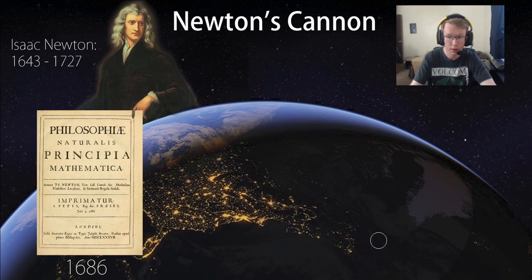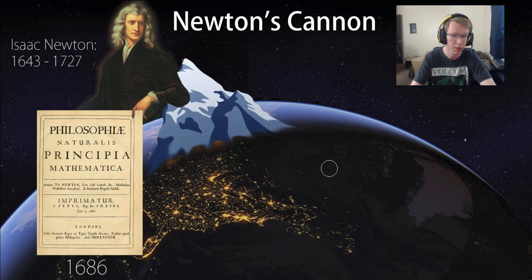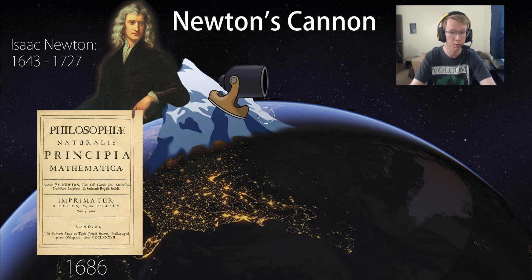So a little bit later on in the publication, Newton visualizes a mountain, a big mountain like this. Something that would make air resistance up here negligible. There's not a lot of, if any, air up there. And upon that mountaintop is going to be a cannon.